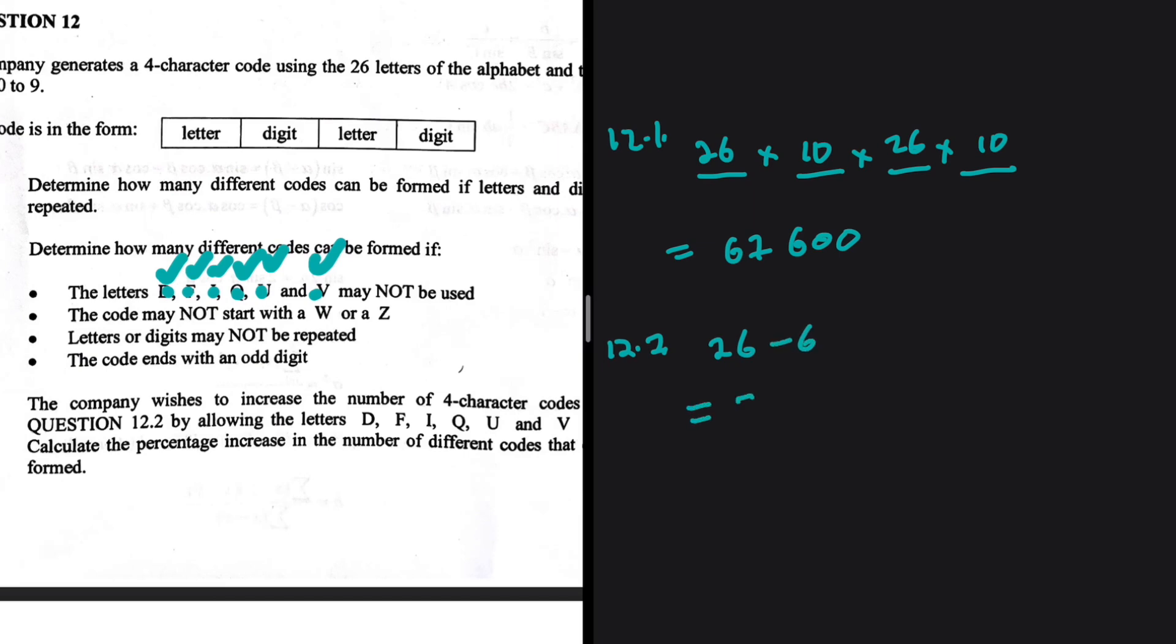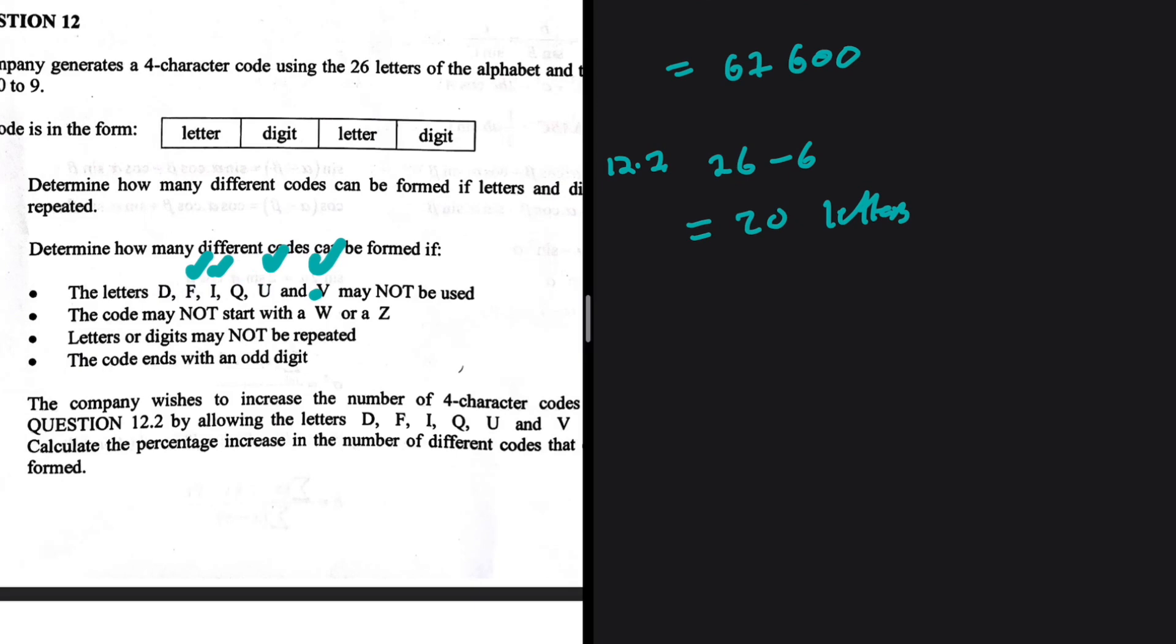And then the code may not start with a W or Z. Is W or Z one of the letters that we eliminated? No, that is important to address. Letters or digits may not be repeated, and the code ends with an odd digit.